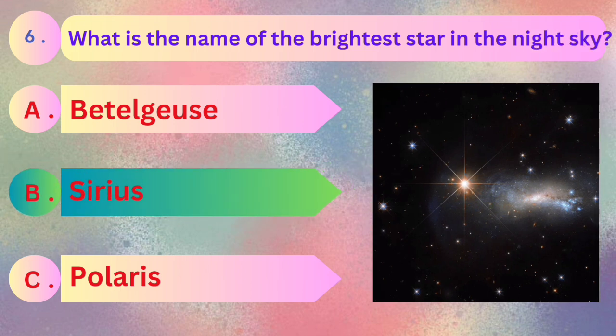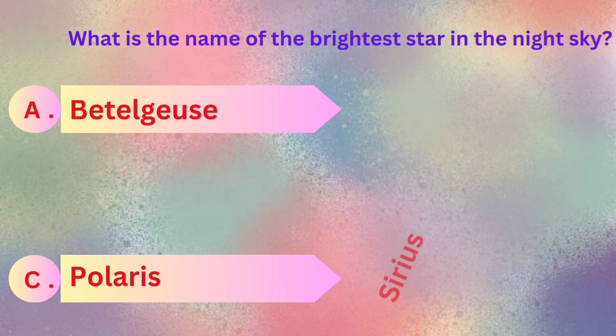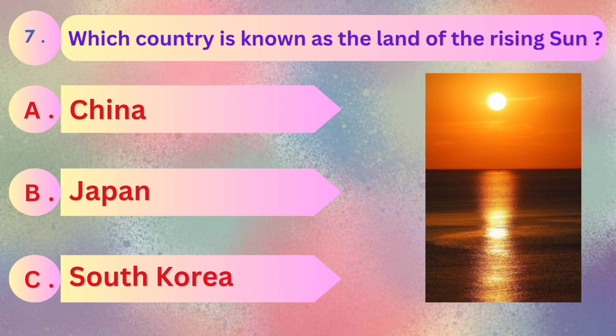Answer is Sirius. And next question: which country is known as the land of the rising sun? China, Japan, South Korea.